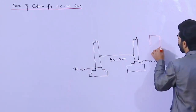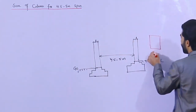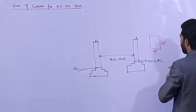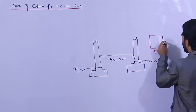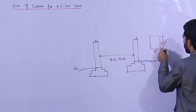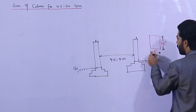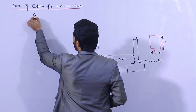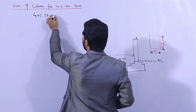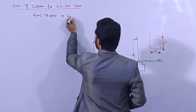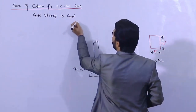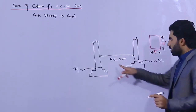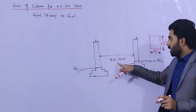The size of the column should not be less than 9 by 12 inches. This is the minimum size of column for a span of 4.5 to 5 meters for two storeys, meaning G plus one — ground plus one storey.